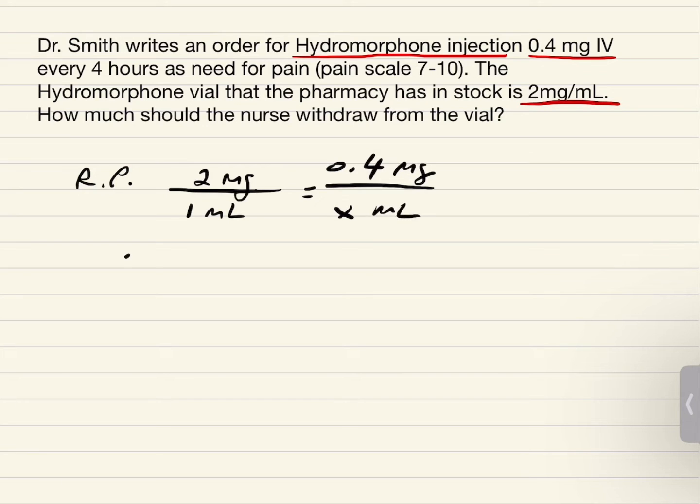x is equal to 0.4 times 1 divided by 2. And the answer is going to be 0.2 milliliters.